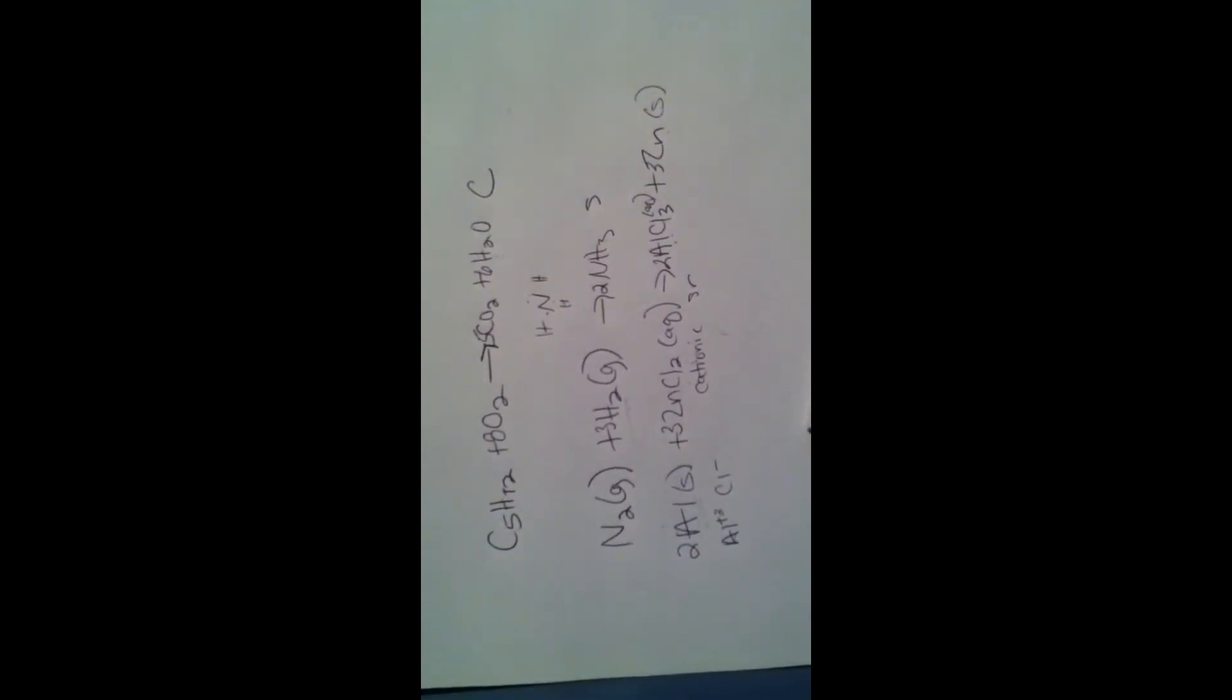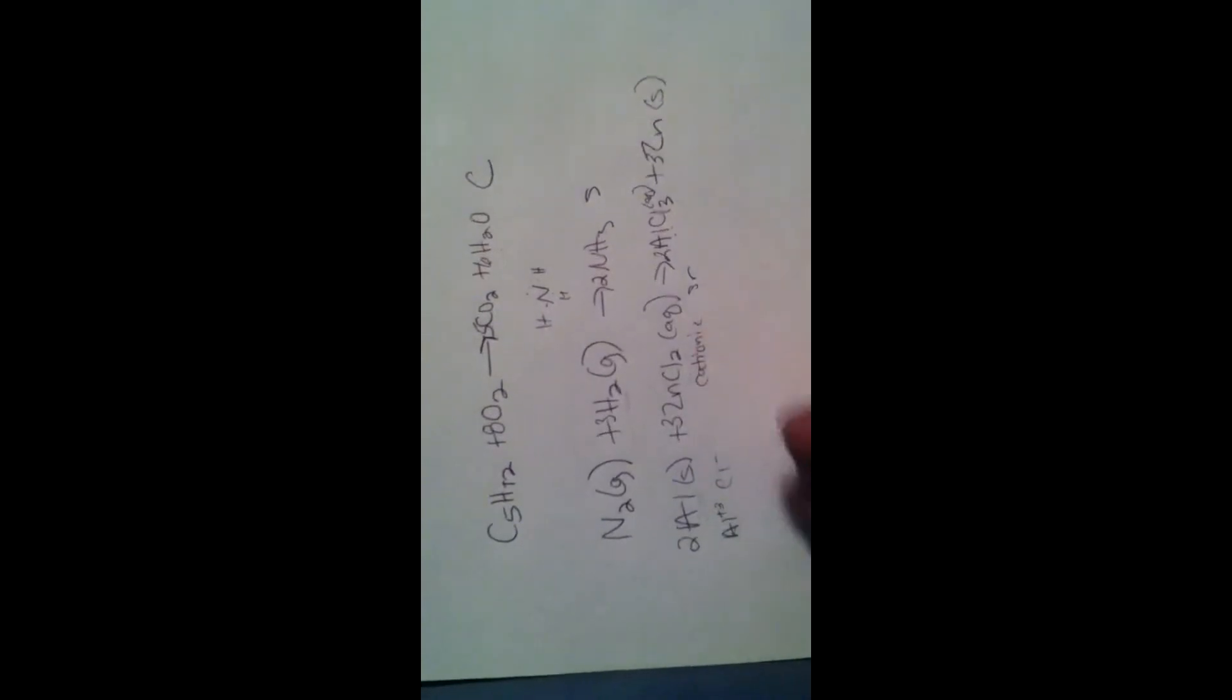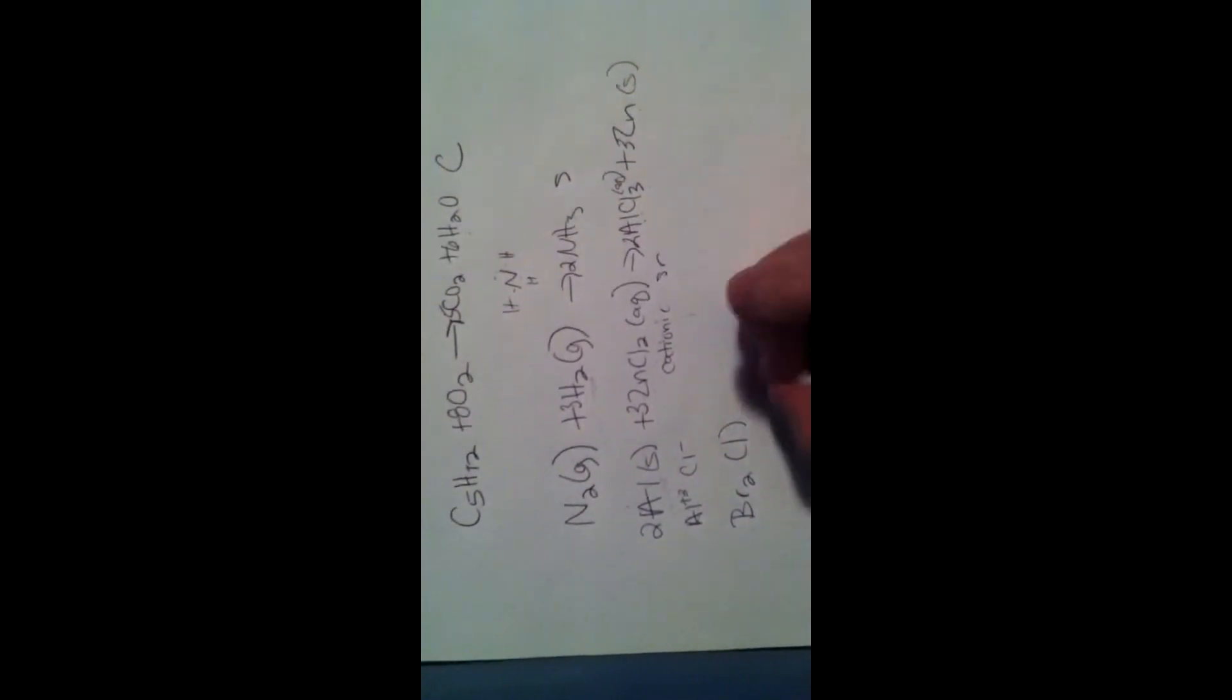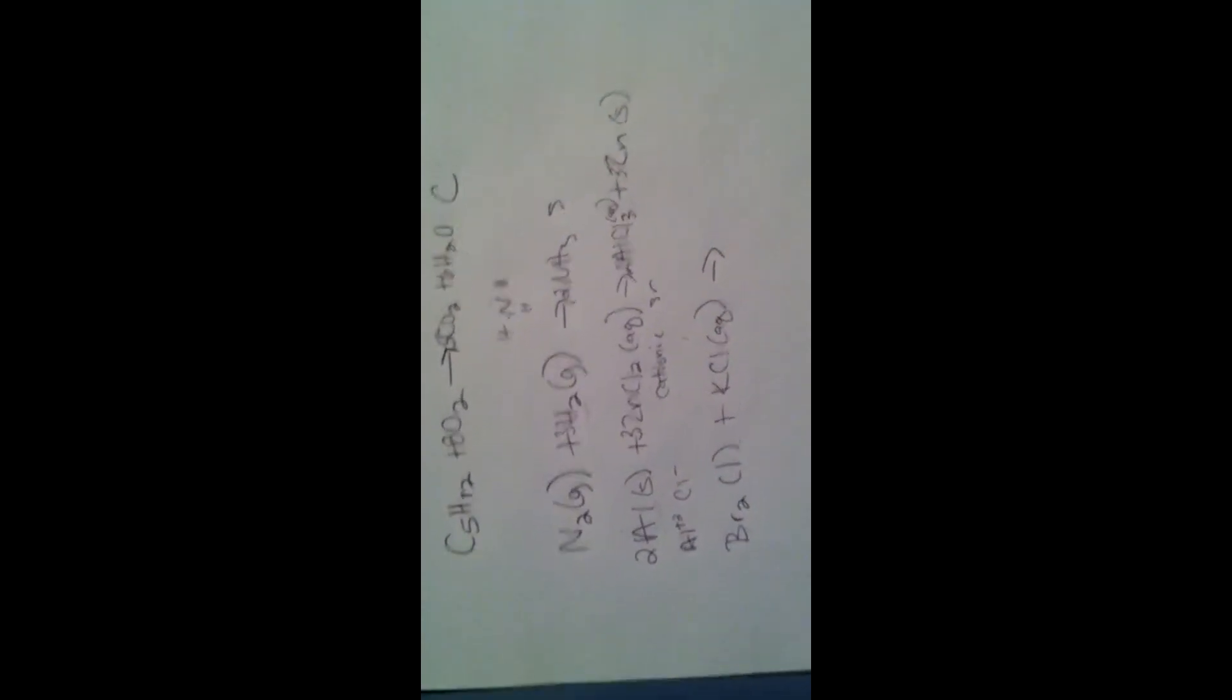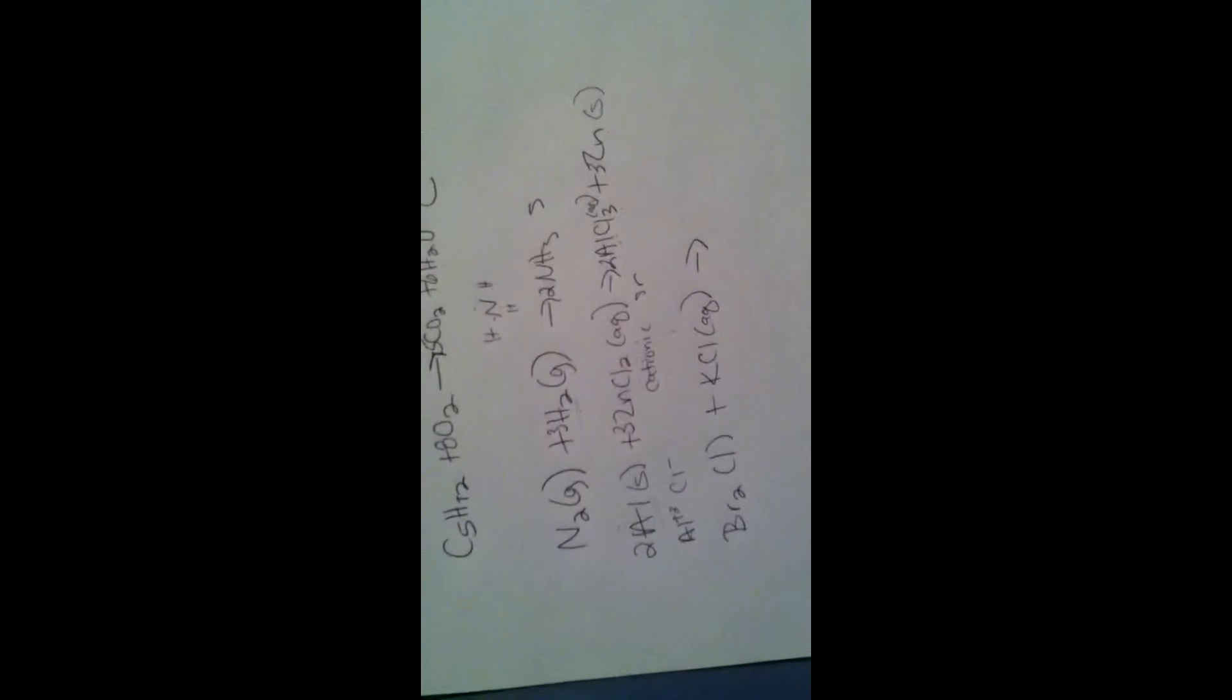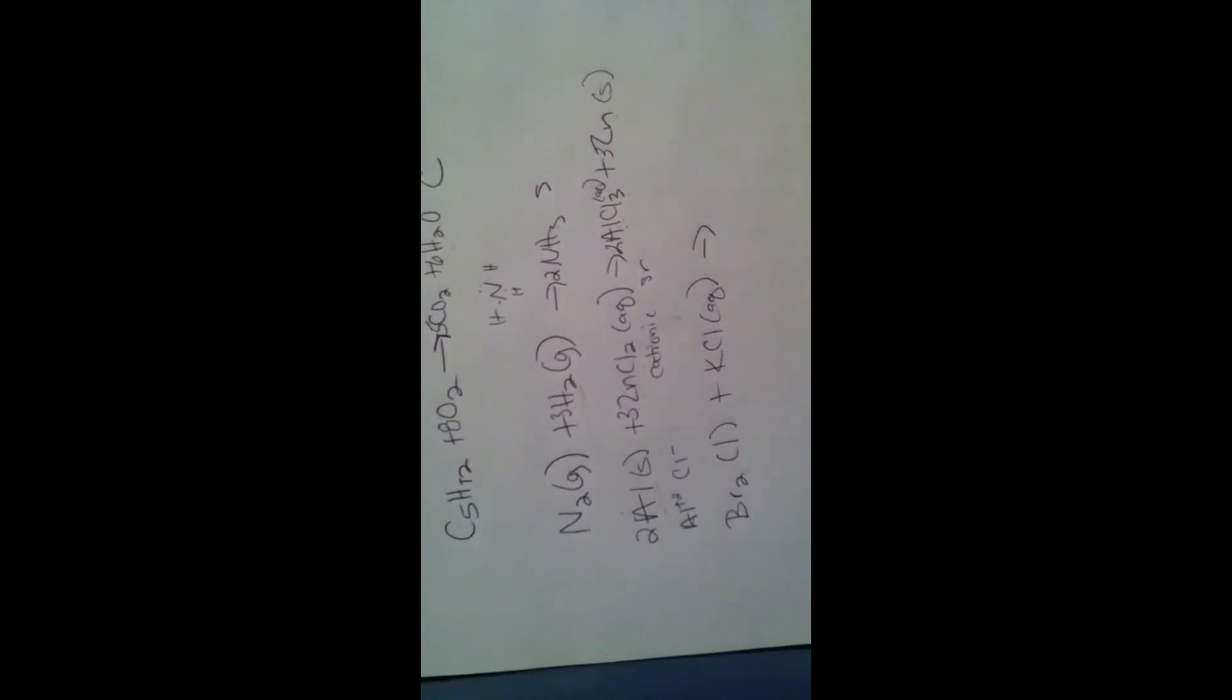Alright, next question. Number 10. We have bromine, which is normal state liquid, and we're going to combine that with KCl, potassium chloride, in aqueous solution. I take a look at it. To me, it looks like it's going to be a single replacement reaction again. So I want to check and see if this can take place. Now this time, bromine wants to kick out chlorine. So we're going to go to my same picture.